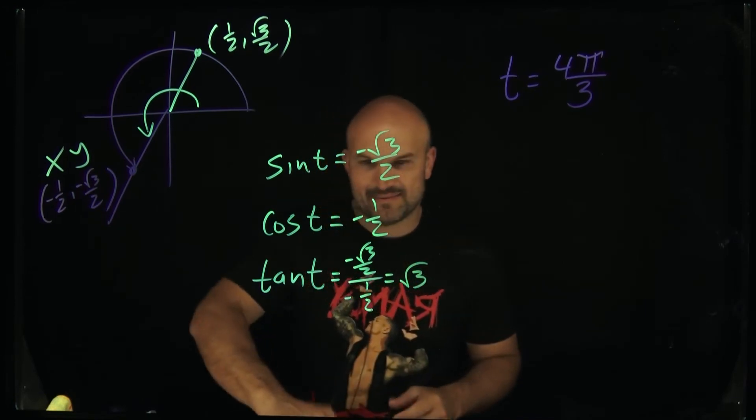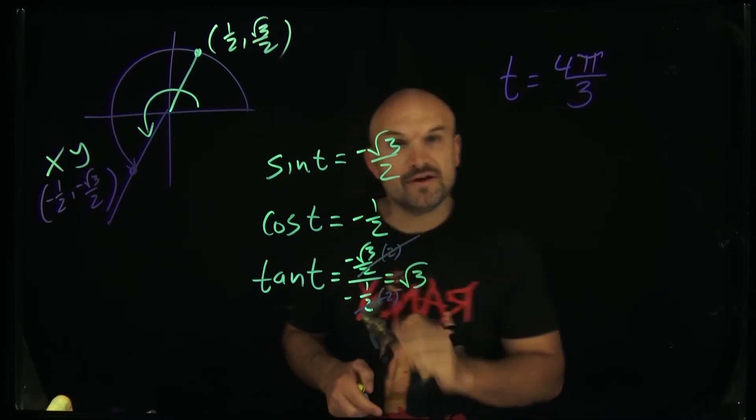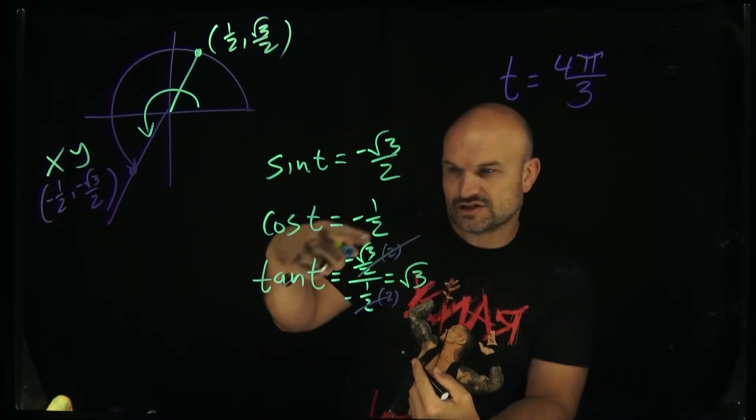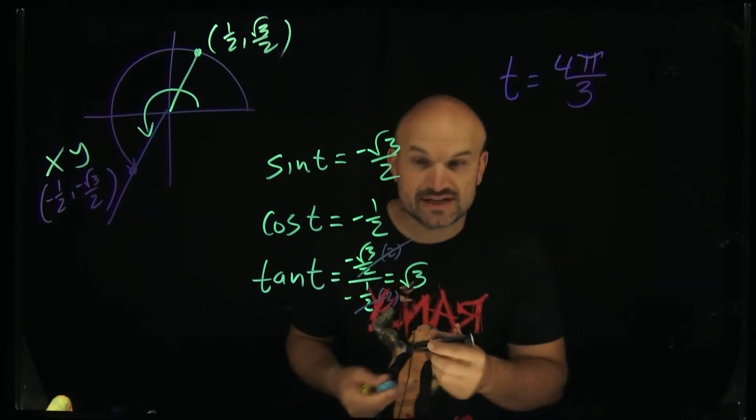So therefore, this is just going to simplify to a square root of 3. Again, just to kind of be a math teacher, if you want to get rid of it, multiply by 2 on the top and bottom. Those 2s will divide out and those 2s will divide out. Therefore, you'll see it's a square root of 3 over a 1 because the negatives are also going to divide out as well.